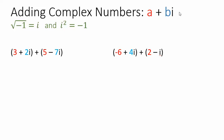A complex number is a number in the form a plus bi, where a and b are real numbers. They can be integers, they can be fractions, they can be decimals. I've chosen some examples down here that are mainly just integers.